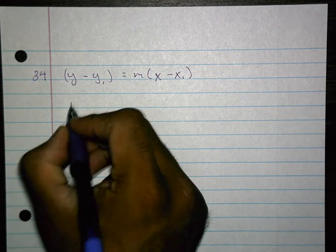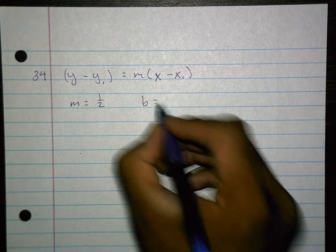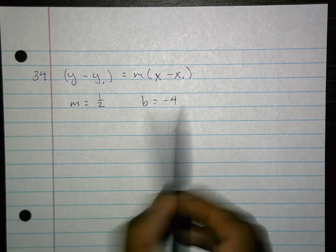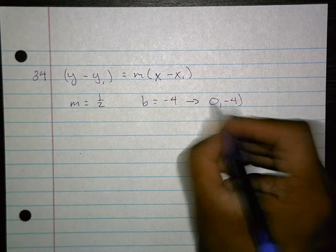Number 34 says m equals a half, then it says b equals negative 4. Well technically you need a coordinate point to plug in here, but b is a y-intercept so that translates to the point (0, -4).